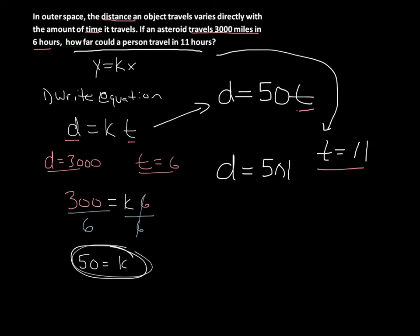We substitute that value of t, and get d = 50 times t. Where we see t, we put 11 in parentheses. 50 times 11 is 550. So the distance equals 550. An object can travel 550 miles in 11 hours.